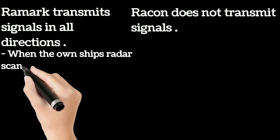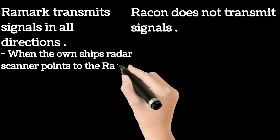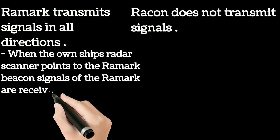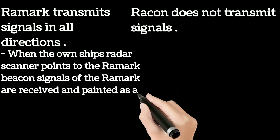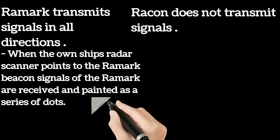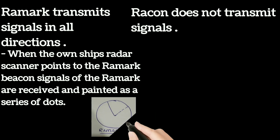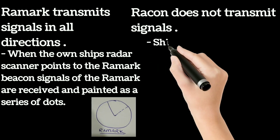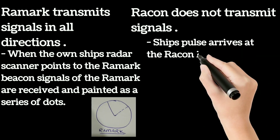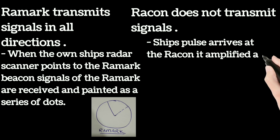When the own ship's radar scanner points to the RAMARC beacon, signals of the RAMARC are received and painted as a series of dots, whereas when the ship's pulse arrives at the RACON,